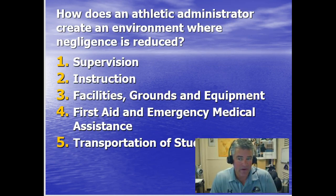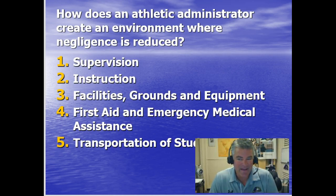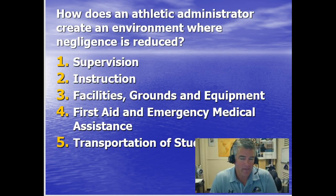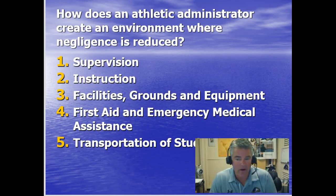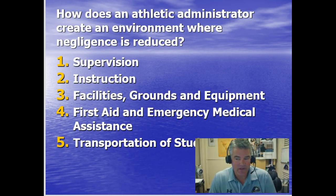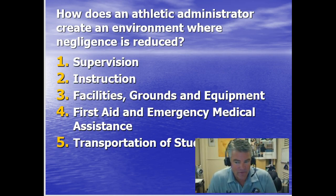How does an athletic administrator create an environment where negligence is reduced? Starting with supervision — legal scholars tell us that 80% of all court cases involving alleged negligence for sport injury deal with some aspect of supervision. The supervisor must be qualified to supervise, holding certifications such as CPR or first aid if required. Supervision must know emergency procedures in case an accident occurs, must actively monitor participants, enforce the rules, and maintain a safe environment. Supervisors cannot absent themselves, must maintain a vantage point allowing them to see the entire area, and need to inform participants through signage or verbal communication.